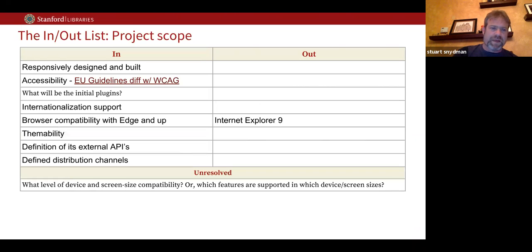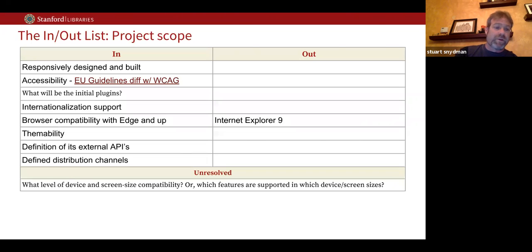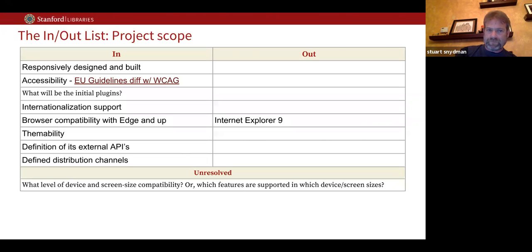A couple of other things in the earliest stages: responsive design so that it responds to different device types and screen sizes. We really want to be accessibility first and internationalization first. Responsive accessibility and internationalization from the beginning are going to be really important for setting the project up for success.